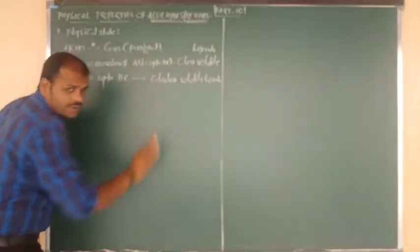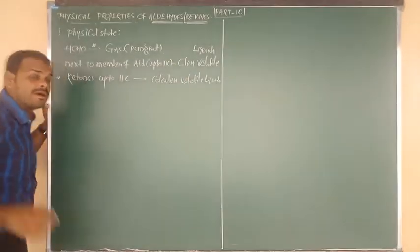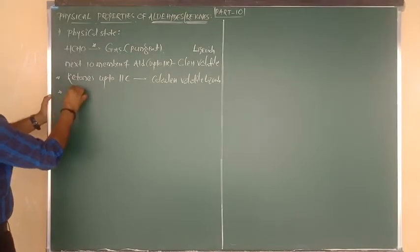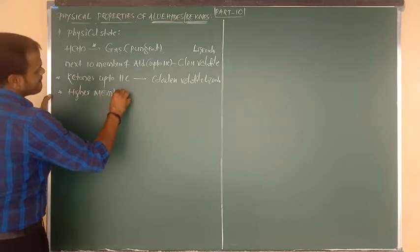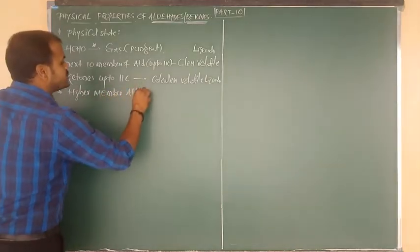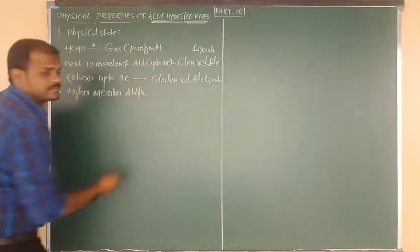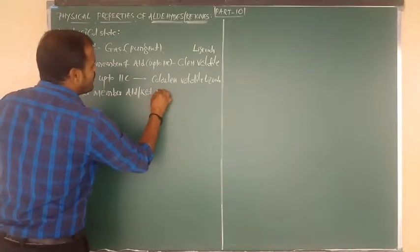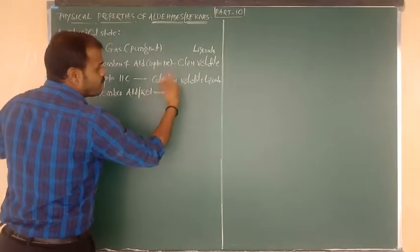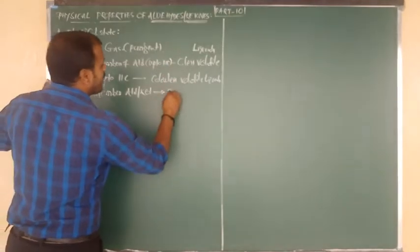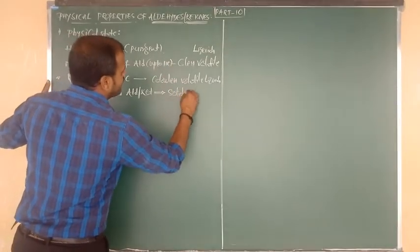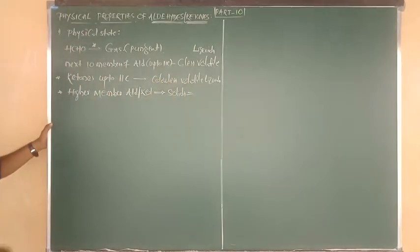What about higher members? All higher members of aldehydes and ketones — more than 11 carbons, i.e., 12 carbons and above — are solids. That is the information about physical state.